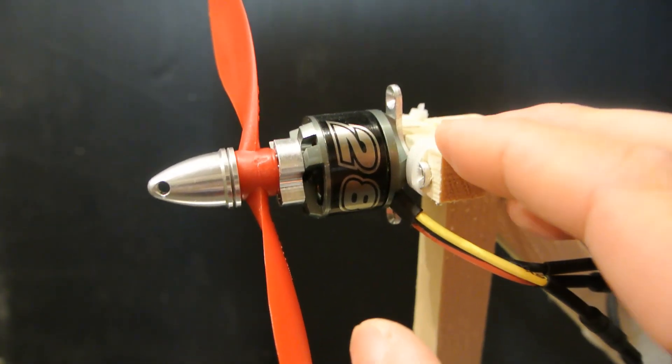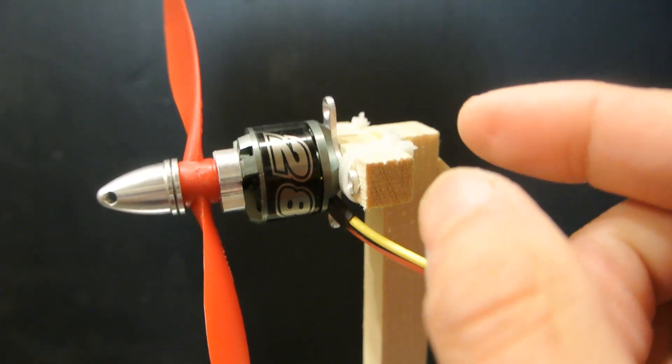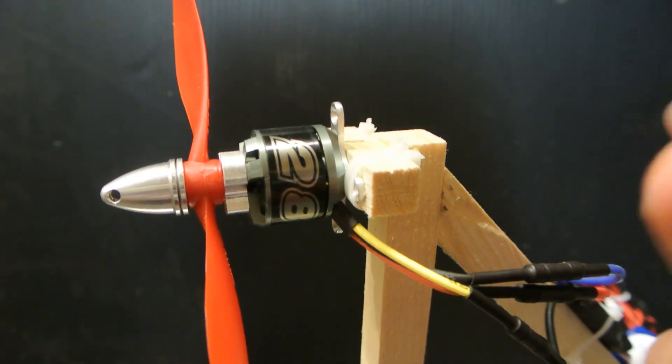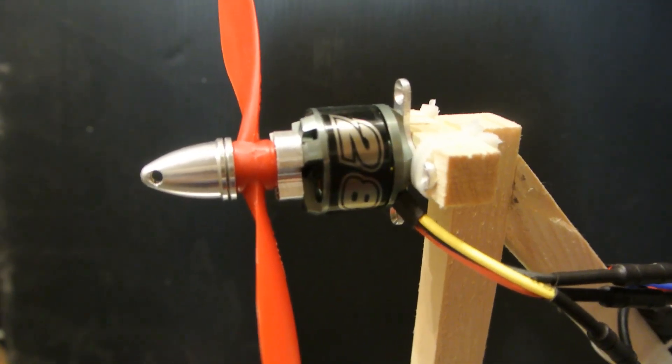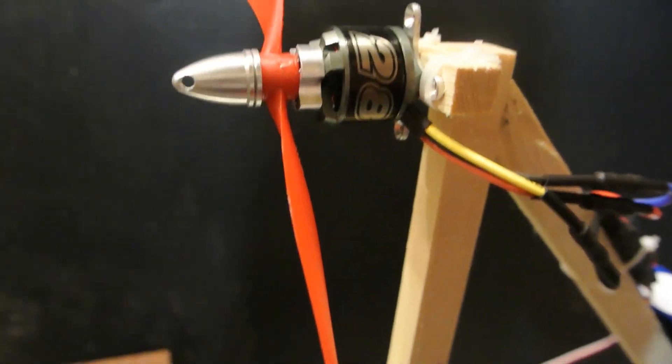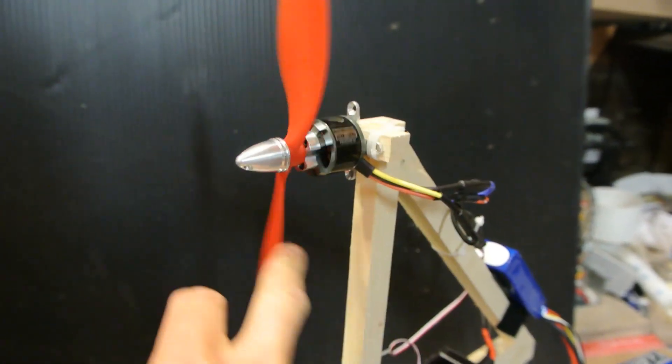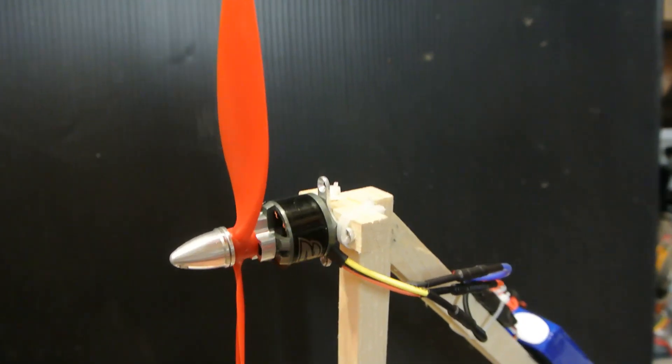I got the short shaft version. You can get it with a shaft that protrudes from the end depending on your application and what you want it for, but for multi-rotors I don't need the shaft to protrude at the back.